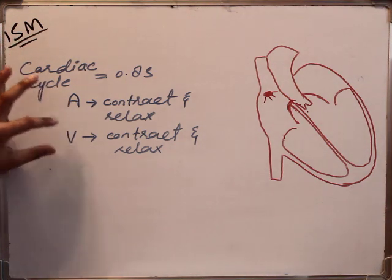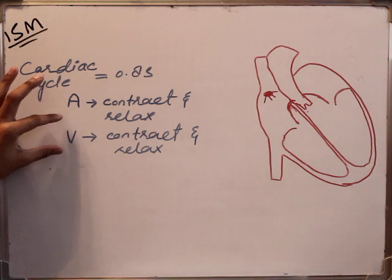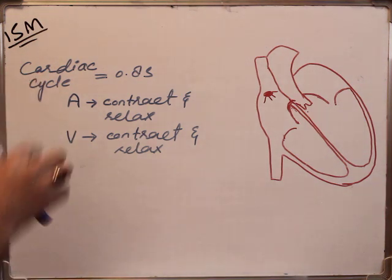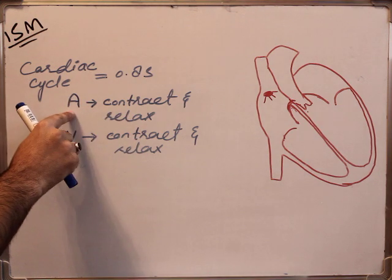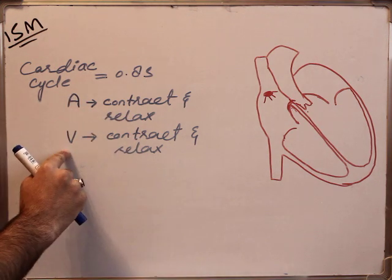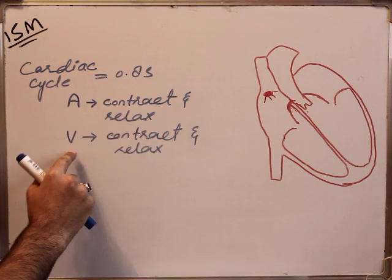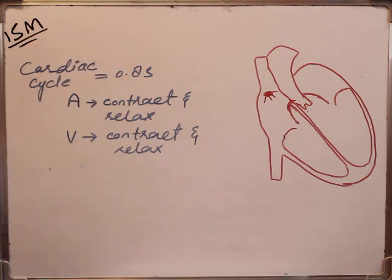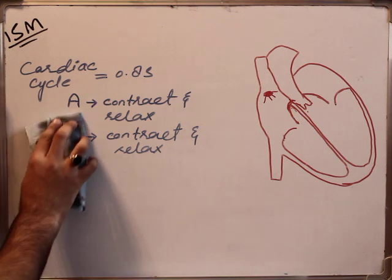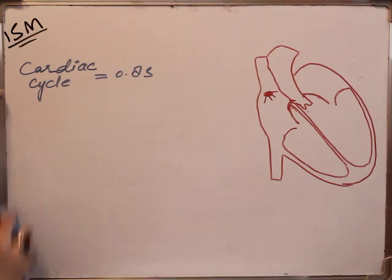So 0.8 second is the time in which the atrium and the ventricle contract and relax once — that is two contractions and two relaxations: one contraction of the atrium, second contraction of the ventricles, one relaxation of the atrium, and second relaxation of the ventricles. This is the time in which the heart completes its contraction and relaxation phase.